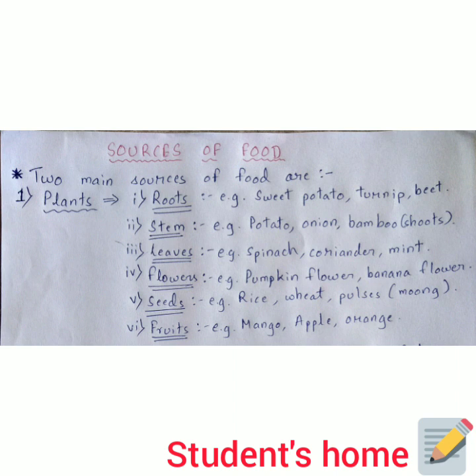Next is flowers. There are some edible flowers that we eat. For example, the pumpkin flower — we deep fry this flower along with a paste made from things like rice flour or besan. The second example is the banana flower, which is quite famous across India.